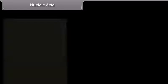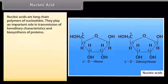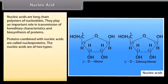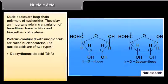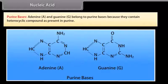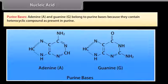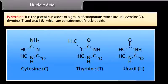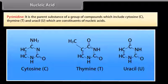Nucleic acids are long-chain polymers of nucleotides. They play an important role in transmission of hereditary characteristics and biosynthesis of proteins. Proteins combined with nucleic acids are called nucleoproteins. The nucleic acids are of two types: deoxyribonucleic acid (DNA) and ribonucleic acid (RNA). Nucleic acids contain two types of nitrogen-containing heterocyclic bases: purines and pyrimidines. Purine bases — adenine and guanine — belong to purine bases. Pyrimidine is the parent substance of a group of compounds including cytosine, thymine and uracil, which are constituents of nucleic acids.